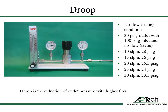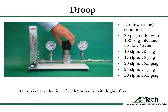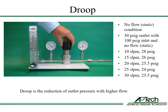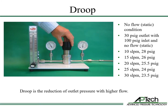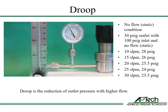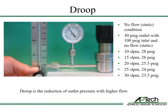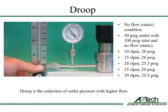Droop is the reduction of outlet pressure with flow. In this example, an AP1000's inlet pressure is set to 100 psi. The regulator is opened and adjusted to 30 psi outlet pressure with no flow. As flow begins, the outlet pressure drops. At 10 liters per minute, the outlet pressure droops to 28 psi.